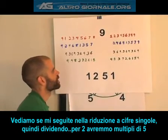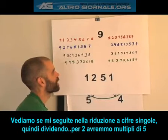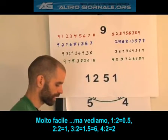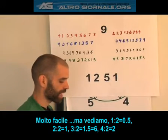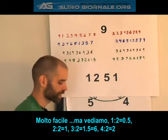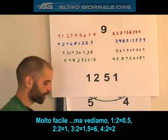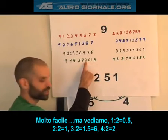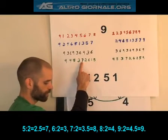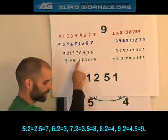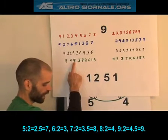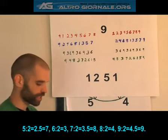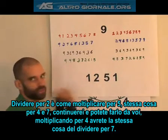So then dividing by 2 should be multiples of 5. It's very easy to get tripped up here, but let's see: 1 divided by 2 is 0.5, which gives me 5. 2 divided by 2 is 1. 3 divided by 2 is 1.5, which equals 6. 4 divided by 2 is 2. 5 divided by 2 is 2.5, which equals 7. 6 divided by 2 is 3. 7 divided by 2 is 3.5, which is 8. 8 divided by 2 is 4. 9 divided by 2 is 4.5, which equals 9. So dividing by 2 is the same as multiplying by 5.